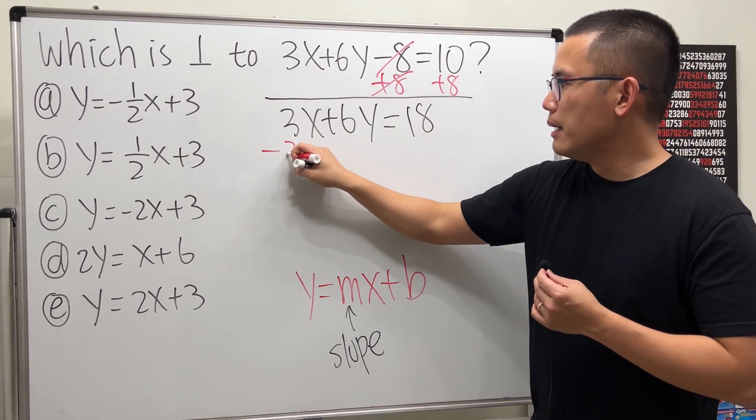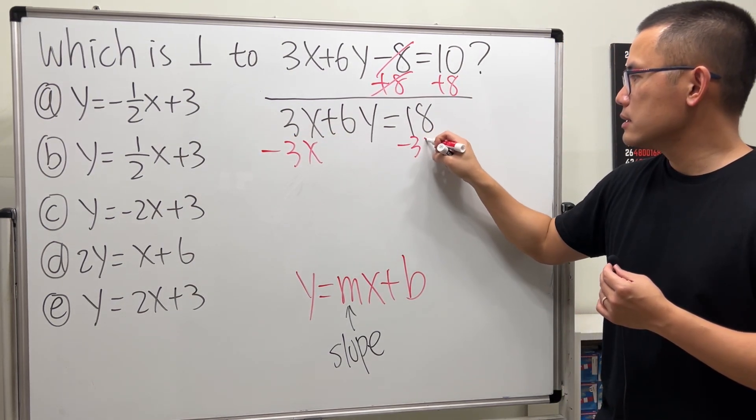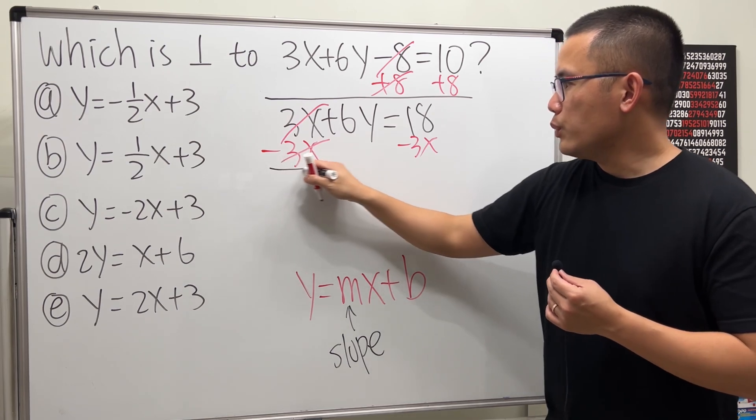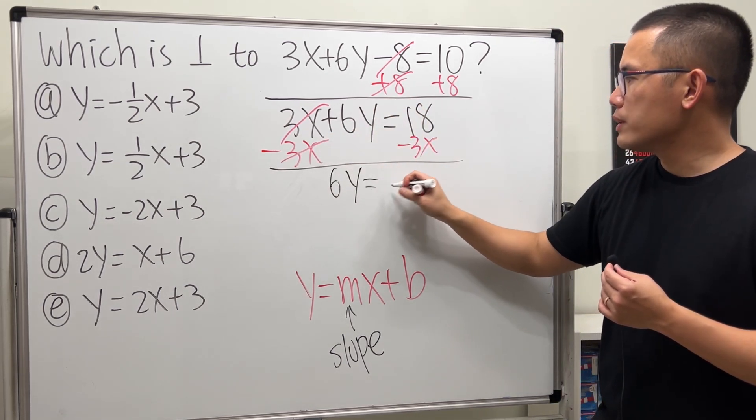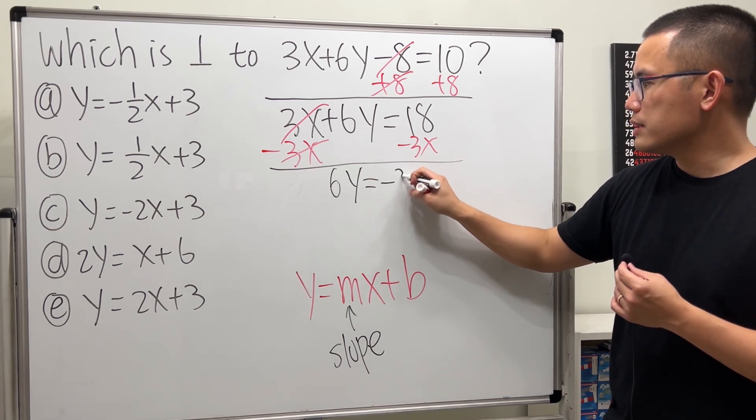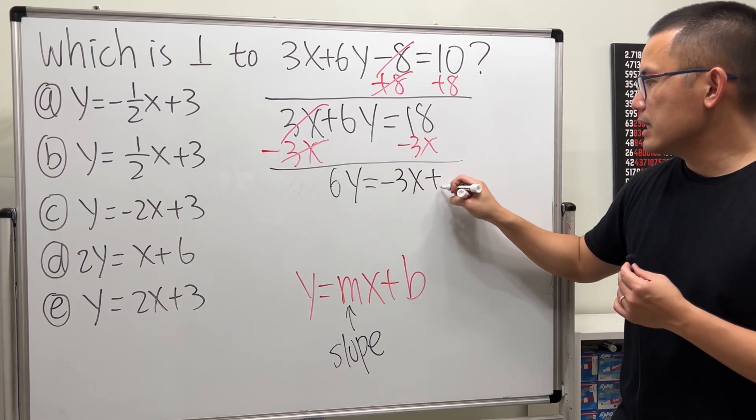Then, we can just minus 3x from both sides, and then we get 6y equals, let's write this down, which is negative 3x and then plus 18.